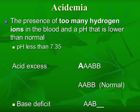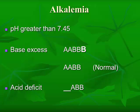In the situation of acidemia, we have too many hydrogen ions in the blood and a pH that is lower than normal — pH is less than 7.35. In normal, that was AABB. In an acid excess, we have more A than B — it's AAABB, too much acid. For a base deficit, we're missing a B, so it's AAB — you can have too much or too little.